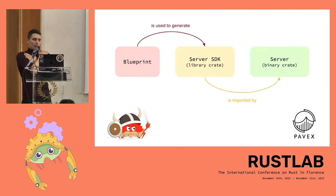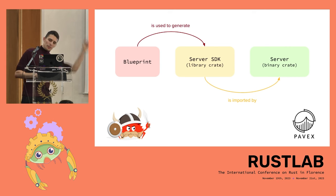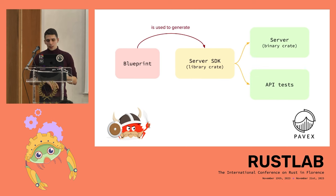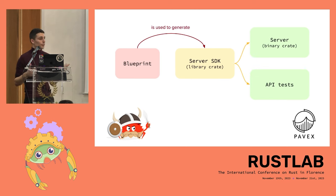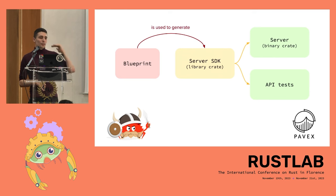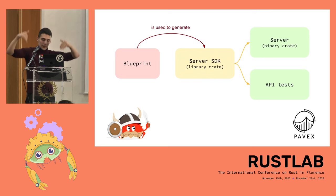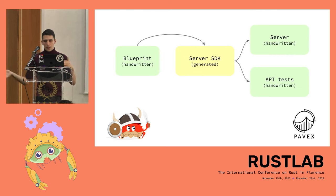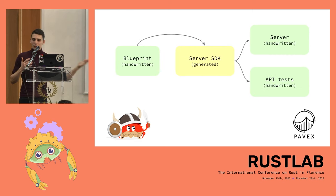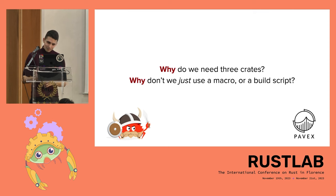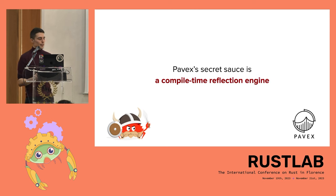If you look at it as boxes and arrows: Blueprint (declared definition) is used to generate the SDK, which is imported by the server. The SDK can also be used to do integration tests, because you have bindings to all the routes with all middleware included. If you want to look at it another way: the green stuff you write yourself, the yellow stuff gets generated for you. So why do we need three crates — why not just use a macro? The reality is that Pavex works because it has a compile-time reflection engine. We need to know what inputs a function takes, what output it returns, whether we have a constructor for a type, and similar things — all at compile time.